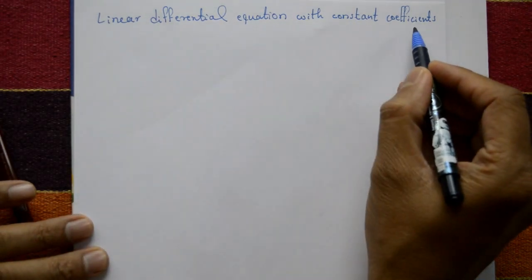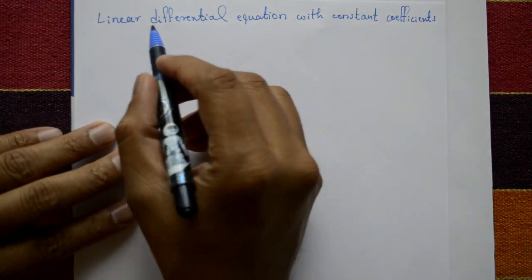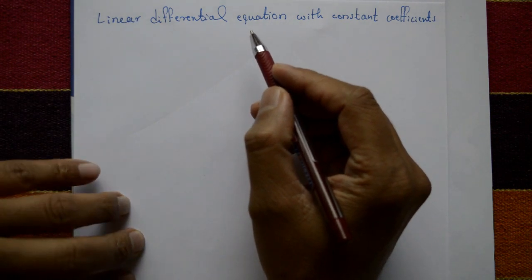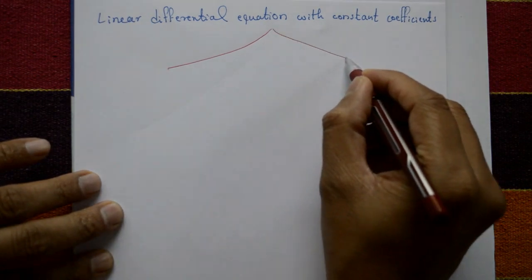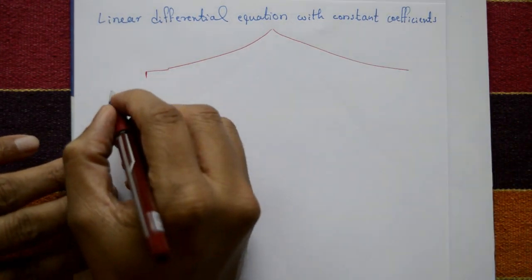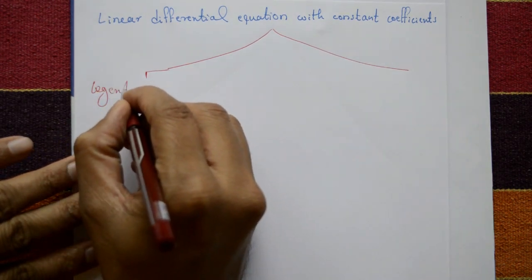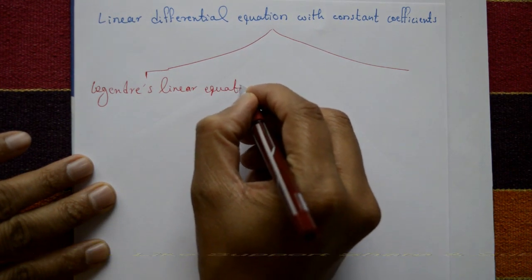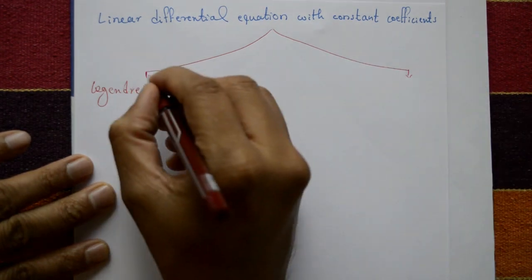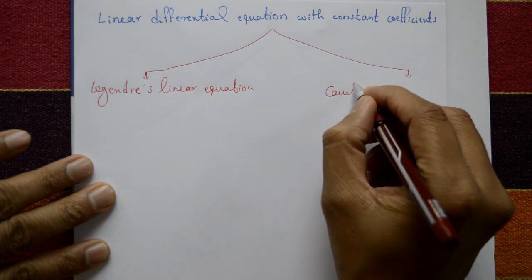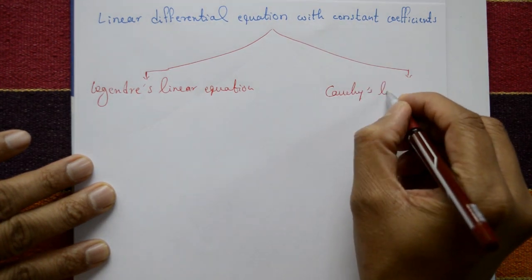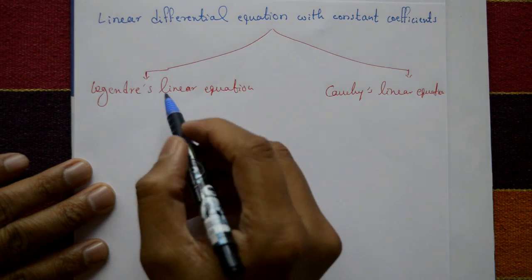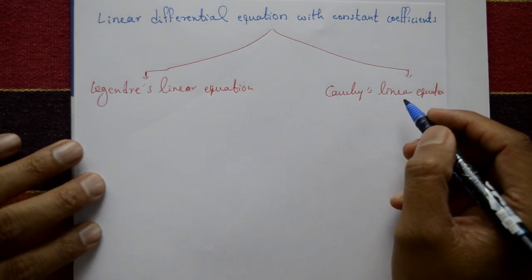We have two types of linear differential equations with constant coefficients. The first one is Legendre's linear equation, and the second one is Cauchy's linear equation. Now, how to solve Legendre's linear equation and Cauchy's linear equation, step by step.